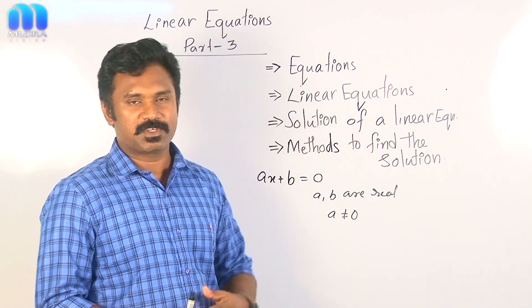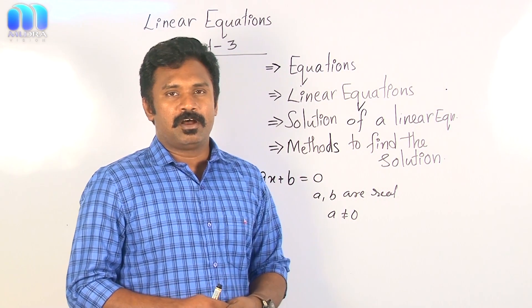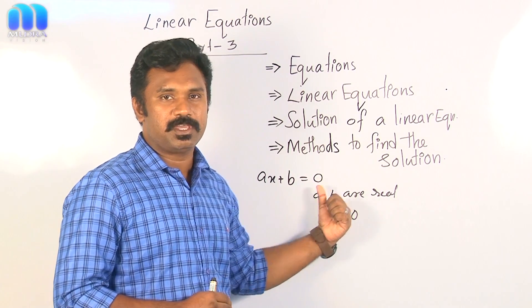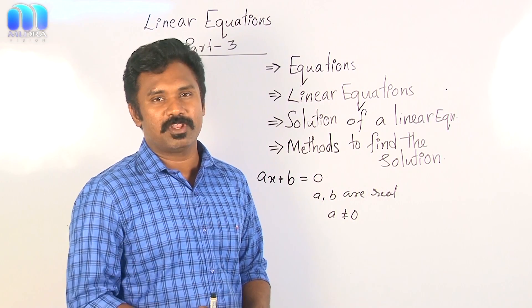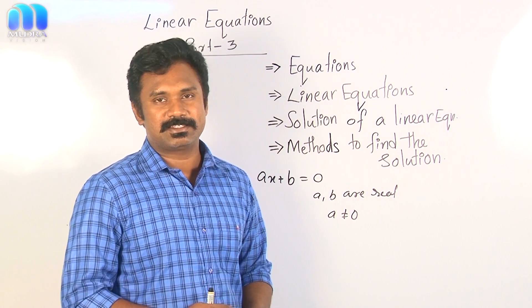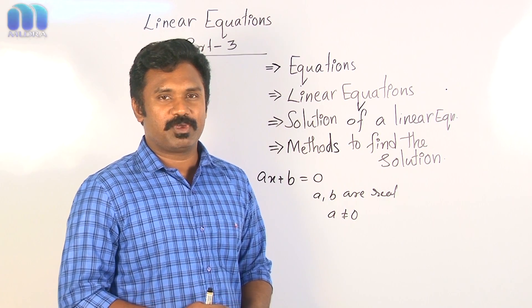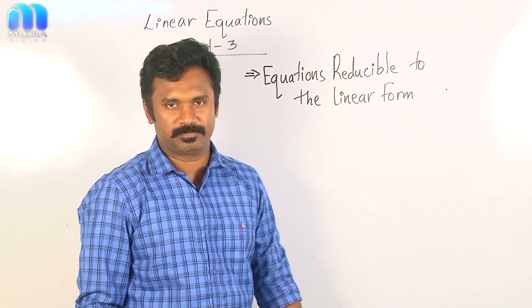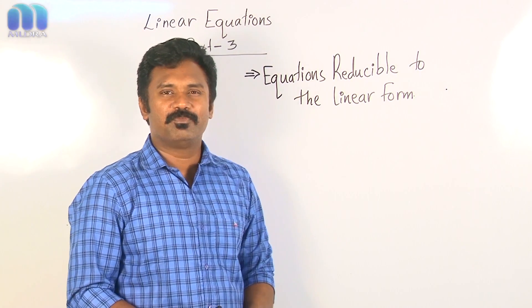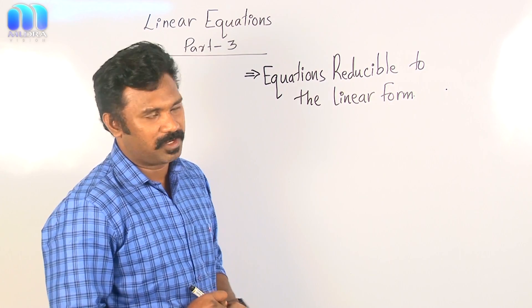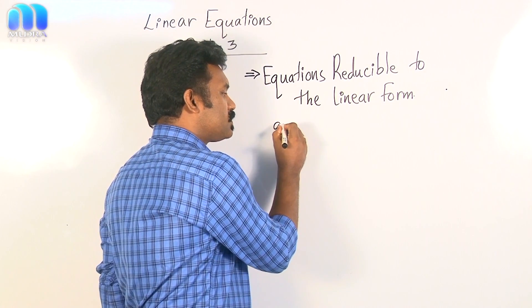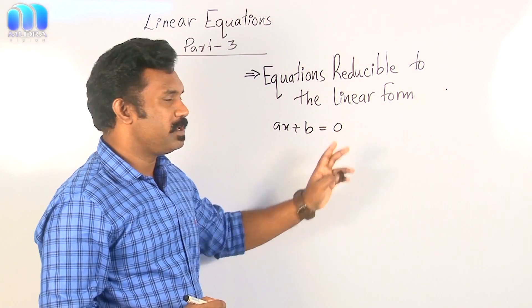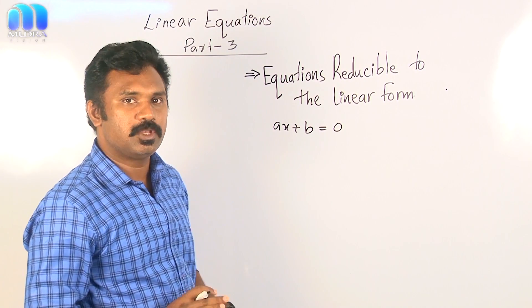Now let us move on to the next topics. The first is reducible equations — equations which can be reduced to the form Ax plus B equal to 0. The second is the most important topic: applications of linear equations in one variable. We all know that the standard form for a linear equation in one variable is Ax plus B equal to 0, where A is not equal to 0.